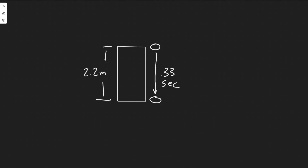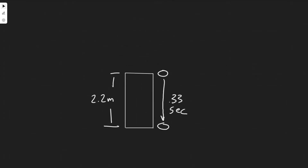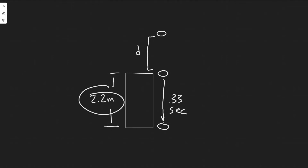In this problem we're told a falling stone takes 0.33 seconds to travel past a window 2.2 meters tall. From what height above the top of the window did the stone fall? The first thing you always want to do in kinematics problems is to draw what's going on. We have a stone and we're going to drop it from a certain height. It's going to fall some distance — we're going to call this distance D — and then fall past the 2.2 meter window.